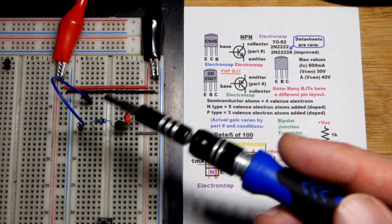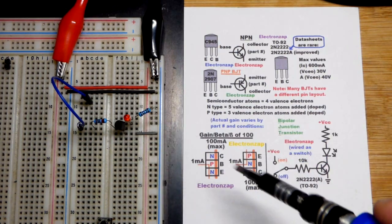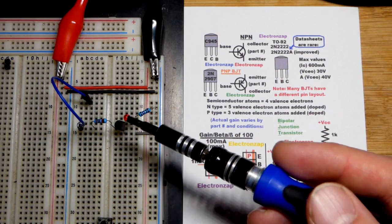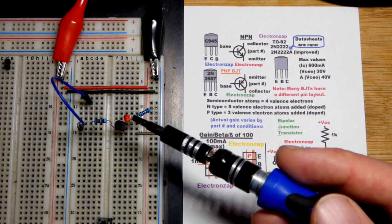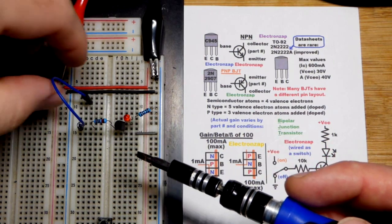We have the simplest circuit where we have it wired as a switch. So the LED is off. That's because the transistor is off. There's no base to emitter current, thus there can be no collector to emitter current.